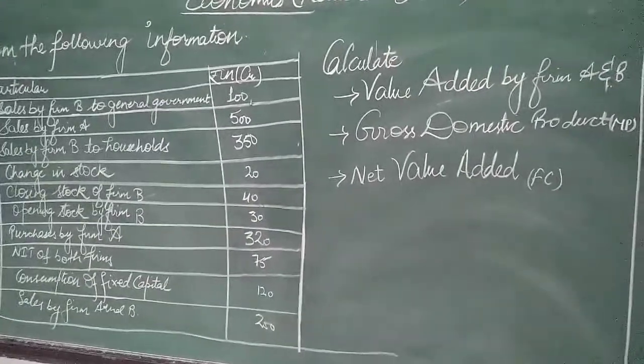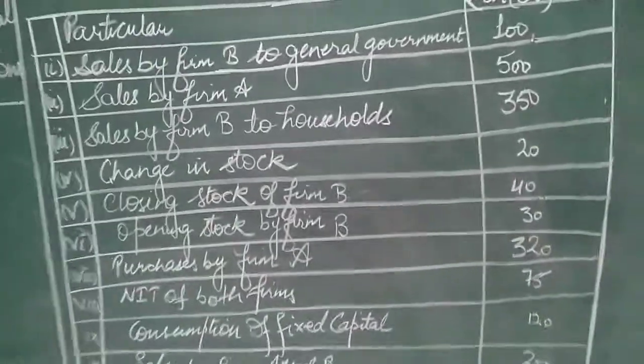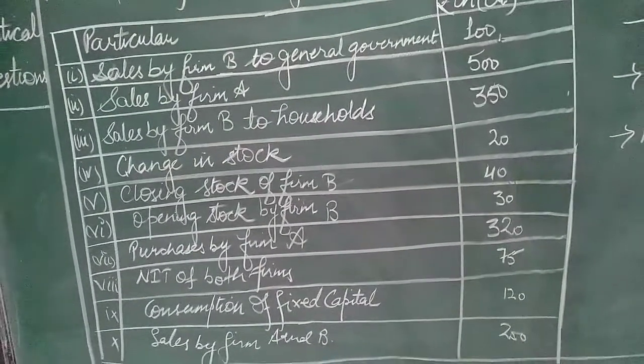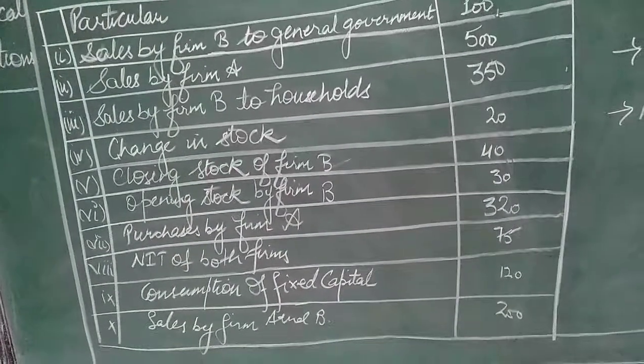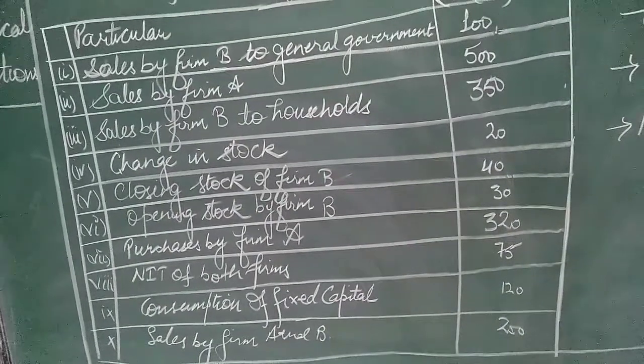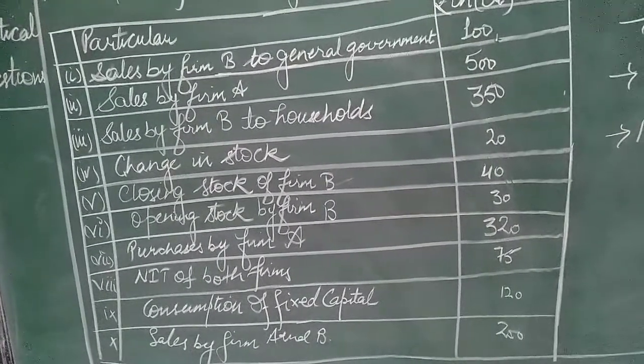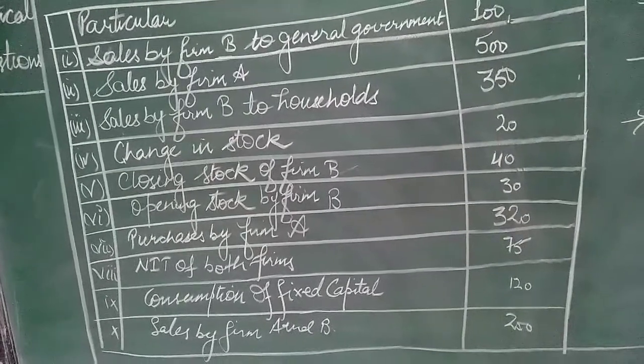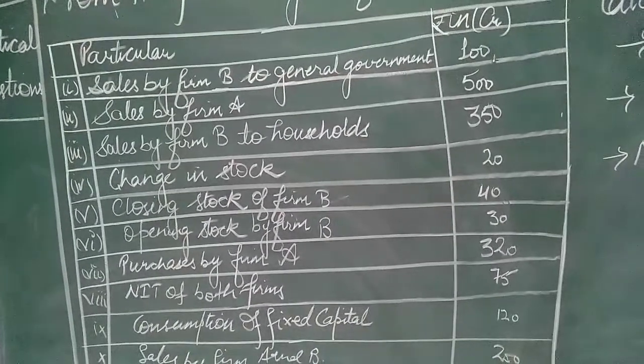We will calculate everything - the journey of MP, FC, then contribution of each firm, GDP, NVA, everything will mark from the beginning. And this is the question which has to be done. We have sales of both the firms, then change in stock also of both firms, purchases, net indirect taxes, and this is the whole question presentation.